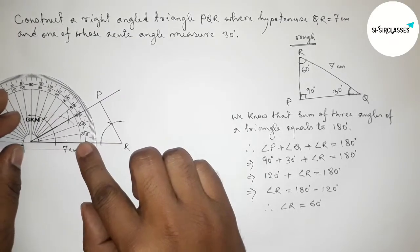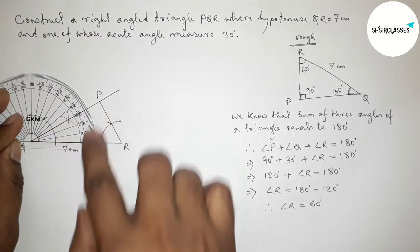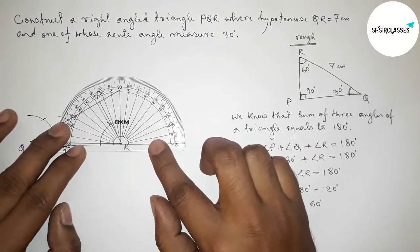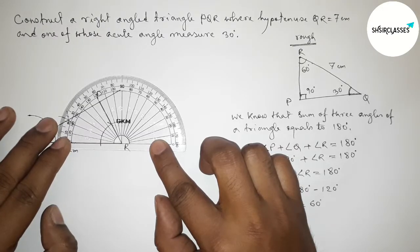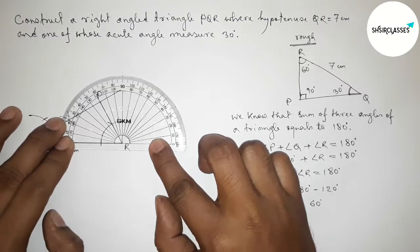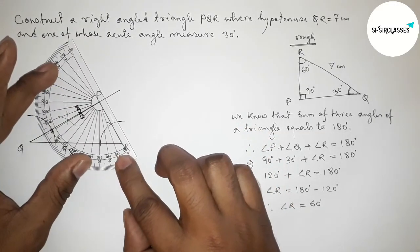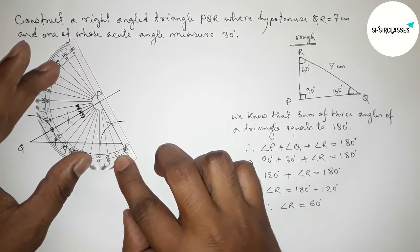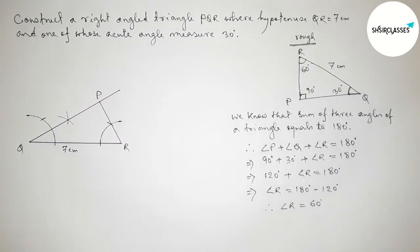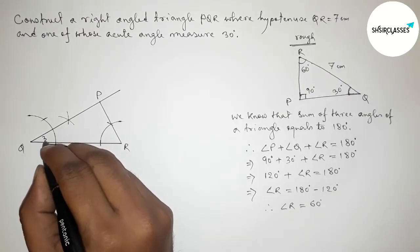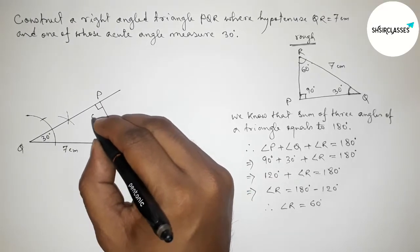Now checking all angles with the help of a protractor. Checking angle Q — this is perfectly a 30 degree angle. Checking angle R — this is also perfectly a 60 degree angle. Checking angle P — this is perfectly a 90 degree angle. So angle Q equals 30 degrees, angle R equals 60 degrees, and angle P equals 90 degrees, marked with the symbol for 90 degrees.